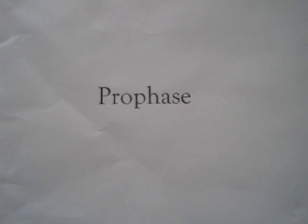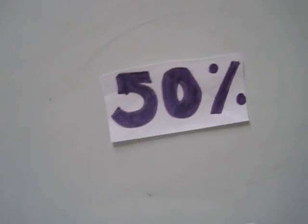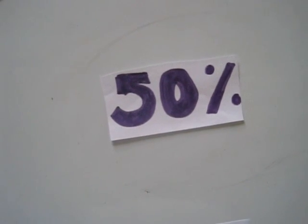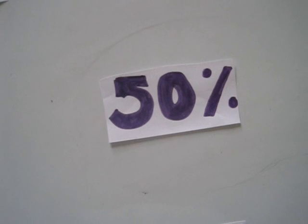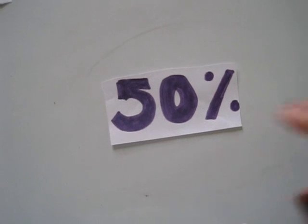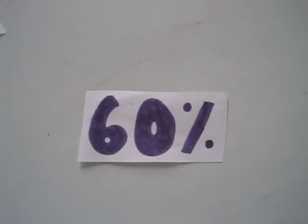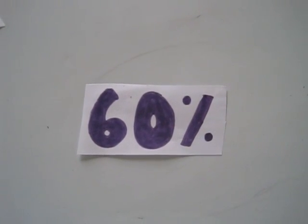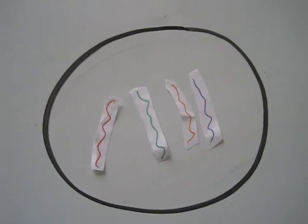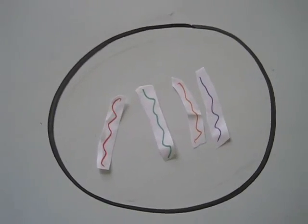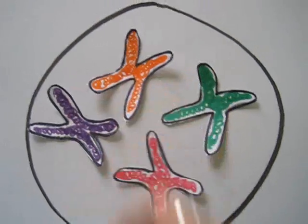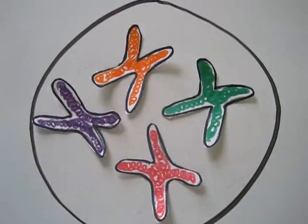The next phase is prophase. Prophase is the longest phase of cell division and takes up to 50% to 60% of the time. In this phase, the chromosomes condense into chromosomes.